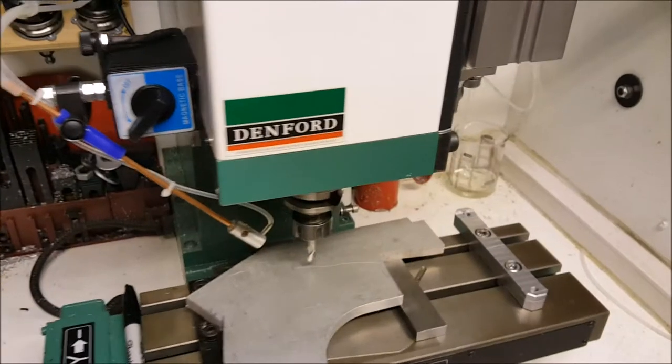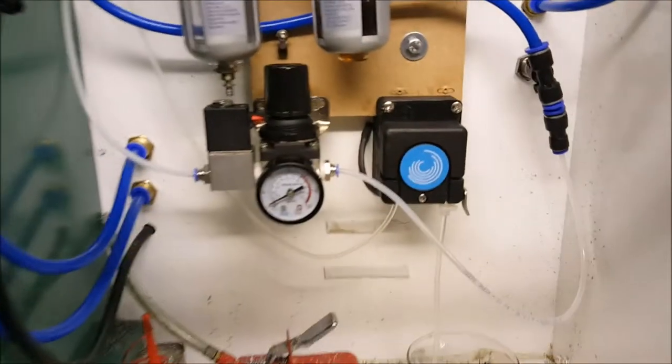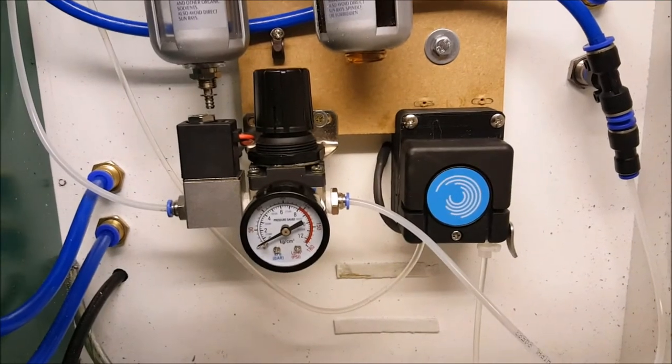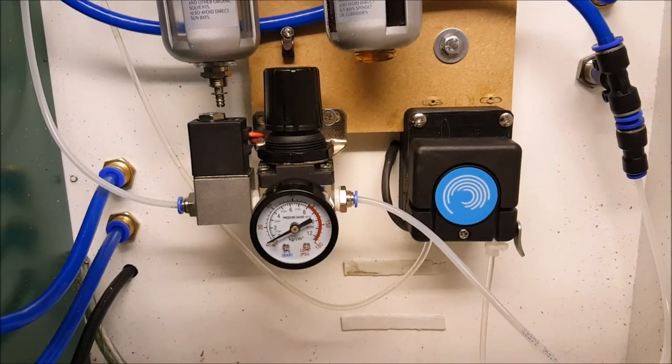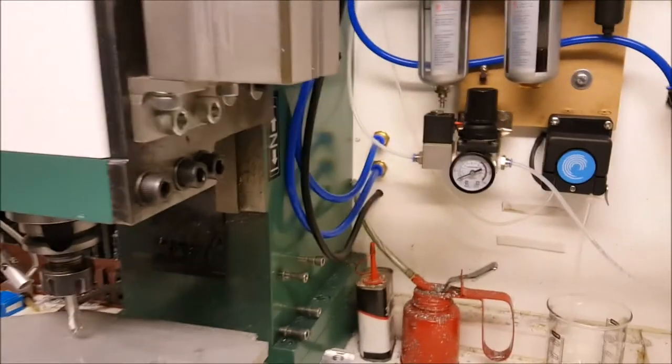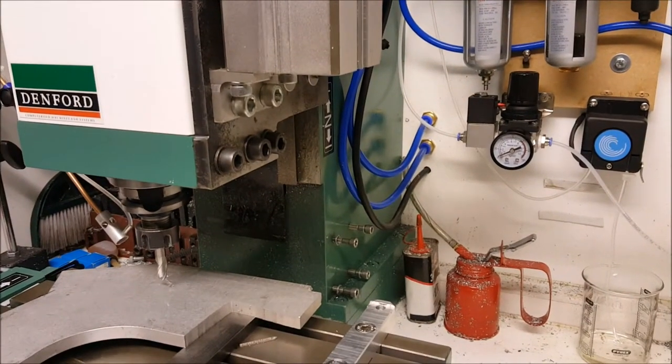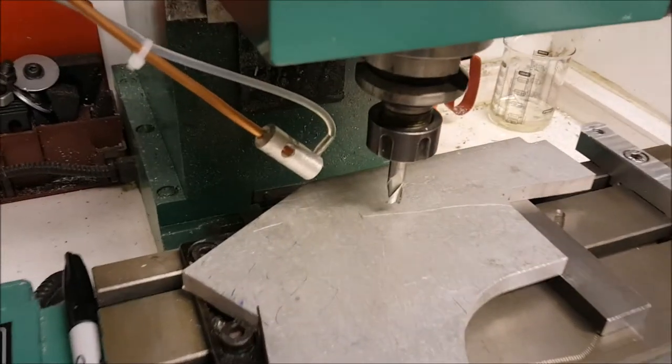So how does this work? You'll see here I've got a pressure regulator with a solenoid valve for the air and a peristaltic pump to feed the coolant through. That's fed to a nozzle that's directed at the cutter.